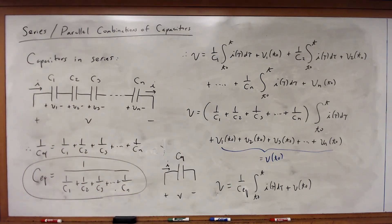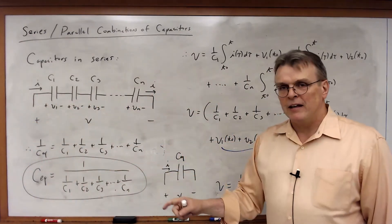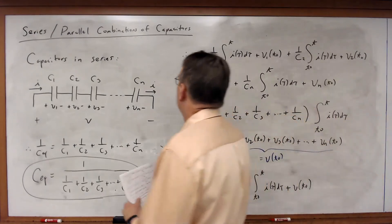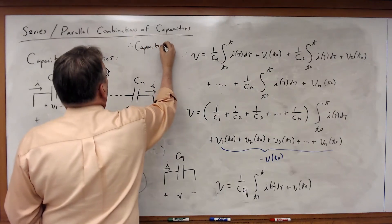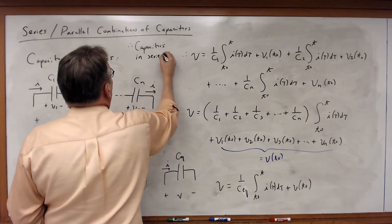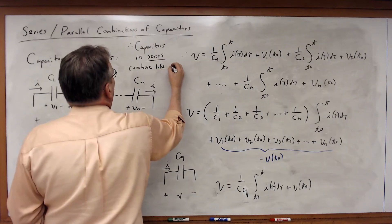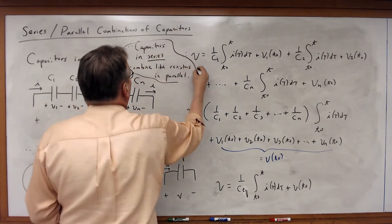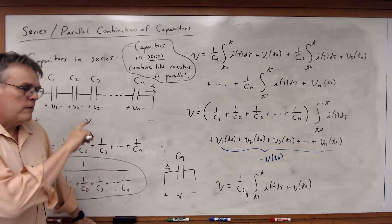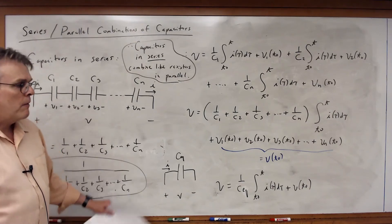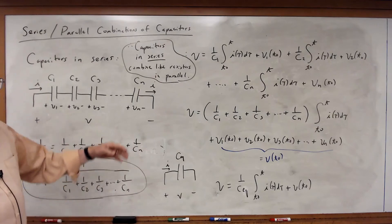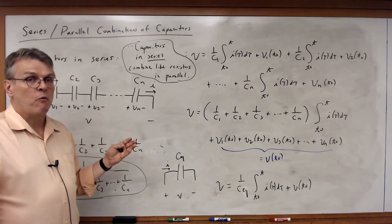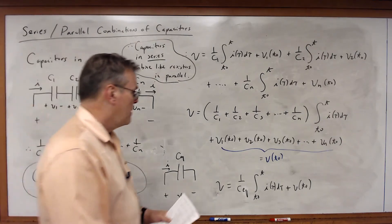So capacitors in series combine like resistors in parallel. We find that we can combine series and parallel capacitor structures together, but the rules are opposite to resistors. We use the series resistor equation form for capacitors in parallel, and the parallel resistor form for capacitors in series — so they're kind of opposite to each other.